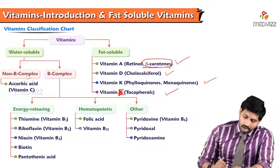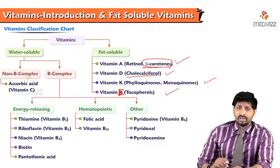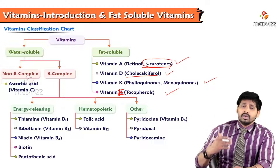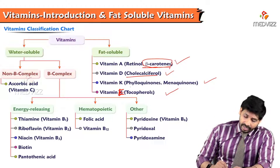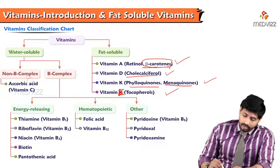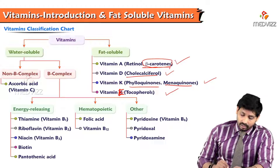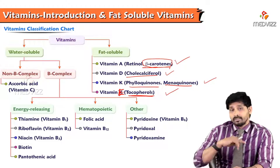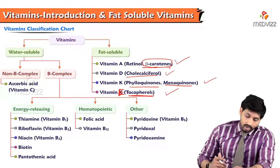Vitamin D is otherwise known as cholecalciferol, also called the sunshine vitamin. Vitamin K is a clotting factor, with phylloquinones and menaquinones being its forms. Vitamin E is known as tocopherol and is a prominent antioxidant.